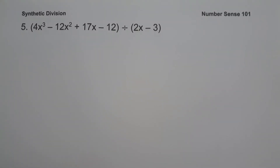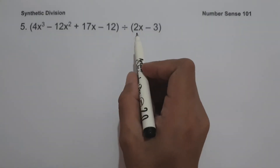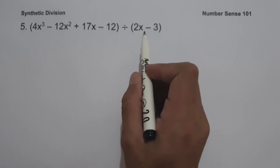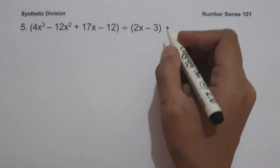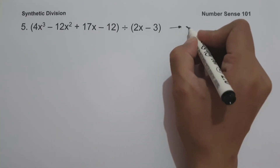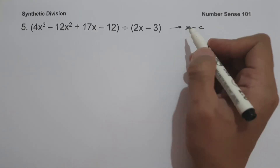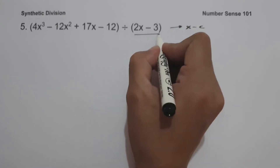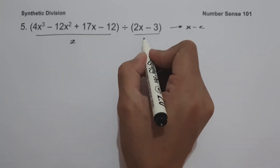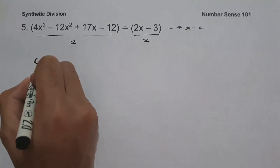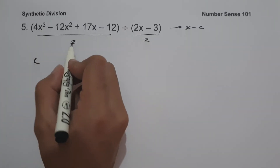On example number 5, we have the quantity 4x cubed minus 12x squared plus 17x minus 12, divided by 2x minus 3. Our divisor is 2x minus 3, and the coefficient of x is 2. We want to write this in the form x minus c where the coefficient of x equals 1. To do that, we divide the dividend and the divisor by 2.